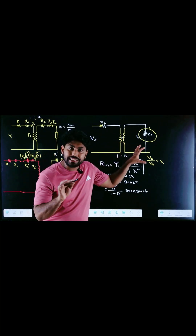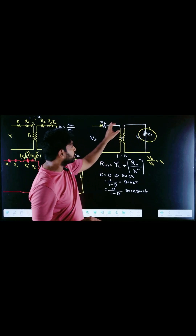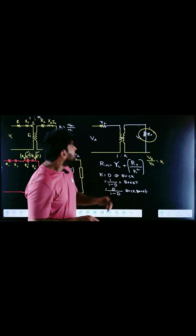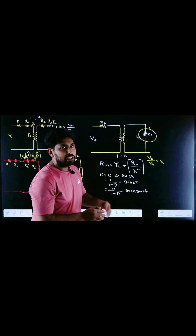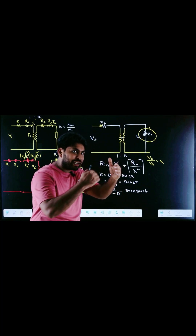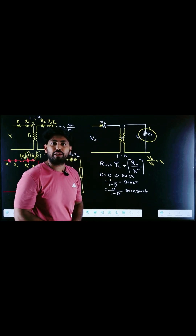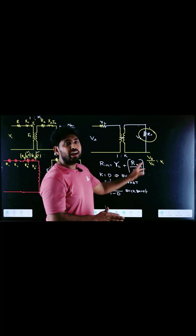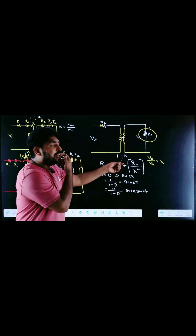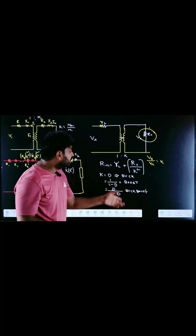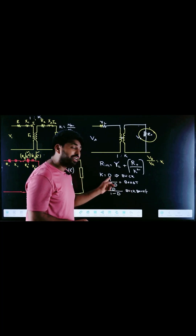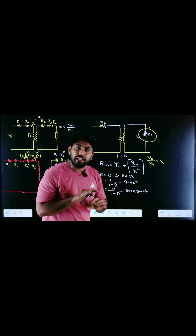Let us see how we can apply this to the DC-to-DC converter. The DC-to-DC converter is also called a DC transformer. If I want to move the output resistance to the input to find the input resistance, that is R0/k². If RL is the inductor resistance, I need to add RL to R0/k², giving RL + R0/k². The value of k depends on the converter type: for a buck converter it is D, for a boost converter it is 1/(1−D), and for a buck-boost converter it is D/(1−D).